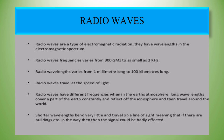Radio waves have different frequencies in the Earth's atmosphere. Long wavelengths cover a part of the Earth constantly and deflect off the ionosphere, then travel around the world. Shorter wavelengths bend very little and travel on a line of sight, meaning that if there are buildings in the way, the signal could be badly affected.